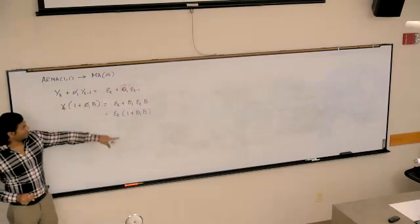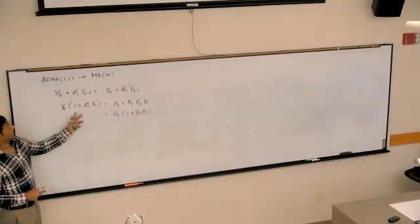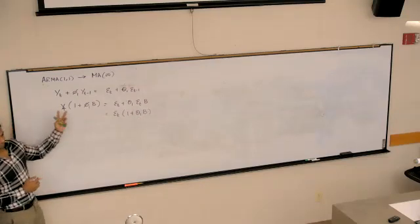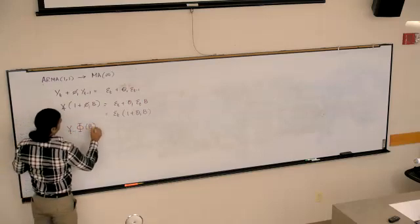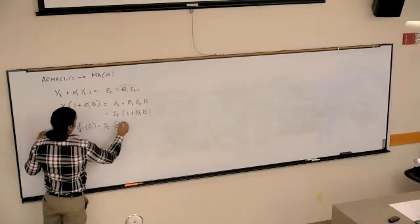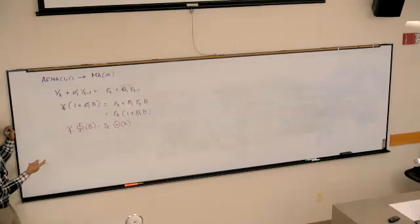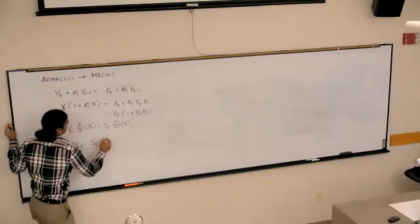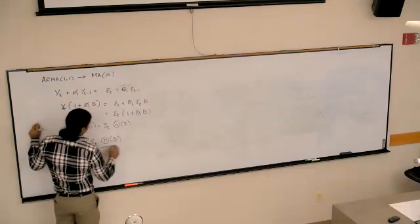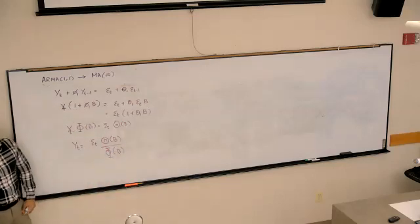Last time I divided by θ(B). This time I'm going to divide by θ(B) as well. That's why I started with this notation when I did the introduction of ARMA(p,q). So y_t would be ε_t times θ(B) over θ(B).